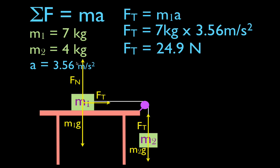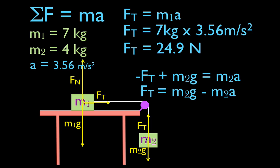You can check the whole problem by applying Newton's second law to the second mass. For m2: minus Ft plus m2g equals m2 times a. Rearranging to solve for the tension force — moving m2g to the other side and multiplying by minus 1 — gives Ft equals m2g minus m2a. With g = 9.8 m/s² and a = 3.56 m/s², you also get 24.9 Newtons, confirming the tension forces are equal in magnitude.